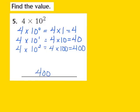I can check myself again because I know that my exponent is a 2, and I should have two zeros in my product.